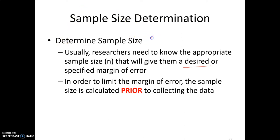Sample size is N. We don't know what the sample size is — this is generally one of the first things you do, well before you develop any confidence intervals. In order to limit the margin of error, the sample size is calculated prior to collecting the data, because we need to know how many people to talk to or how many surveys to print out. This is something we do before we collect any data.